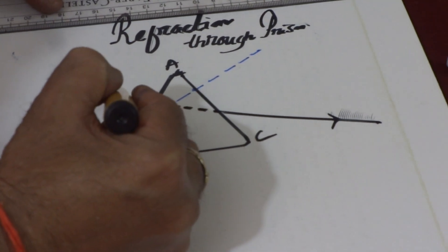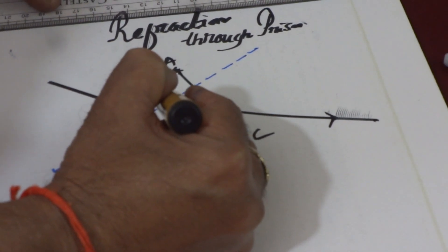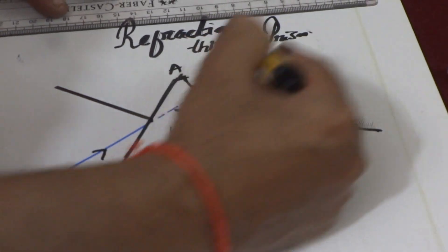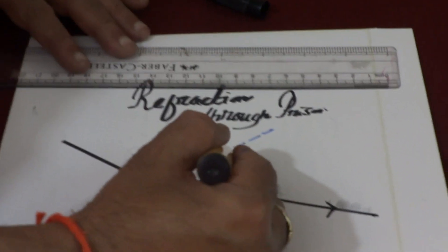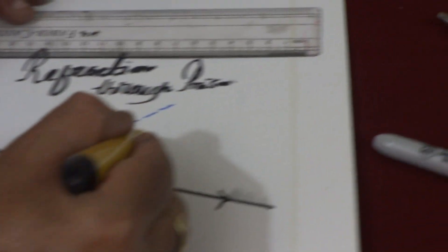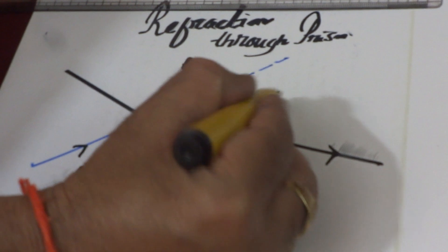This is normal. This is the incident ray, the path of the incident ray. This is path of the final ray. The angle between these two is called angle of deviation.